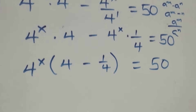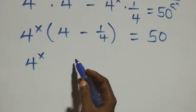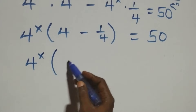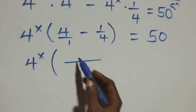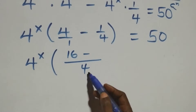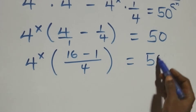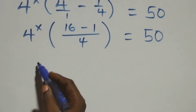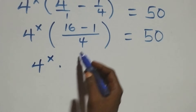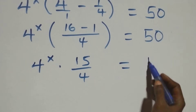Here we have 4 raised to power x multiplied by the bracket. We have 4 over 1 and 1 over 4: 4 times 4 is 16, minus 1 times 1 that's 1, all over 4, then equals 50. This becomes 4 raised to power x times 15 over 4 equals 50.